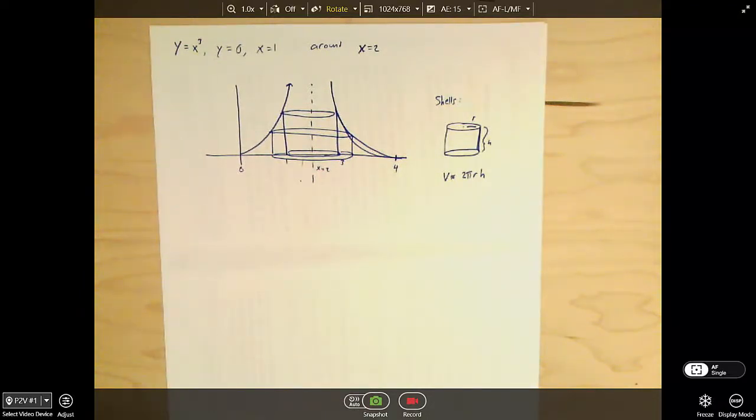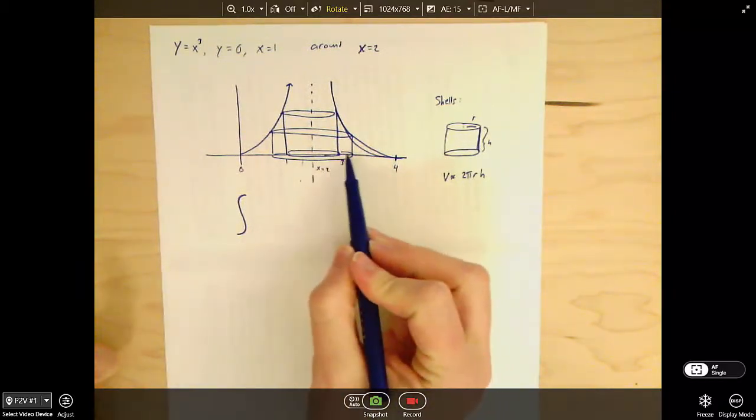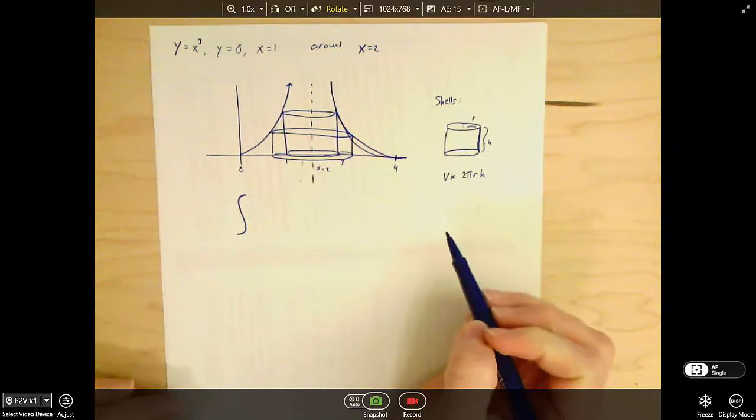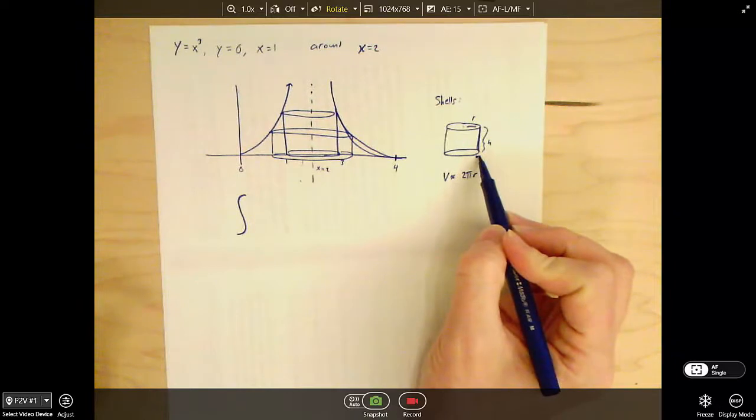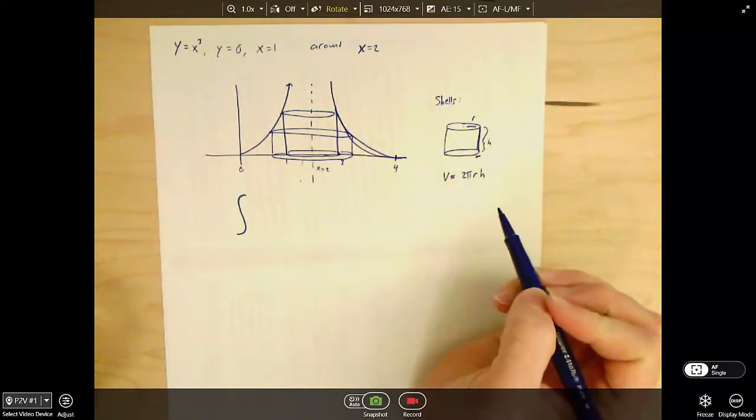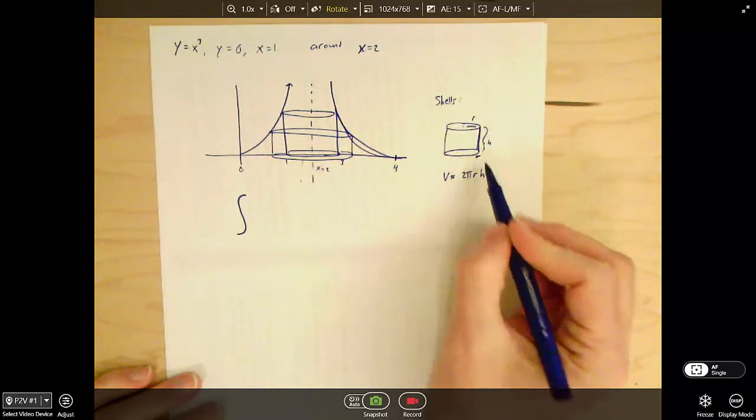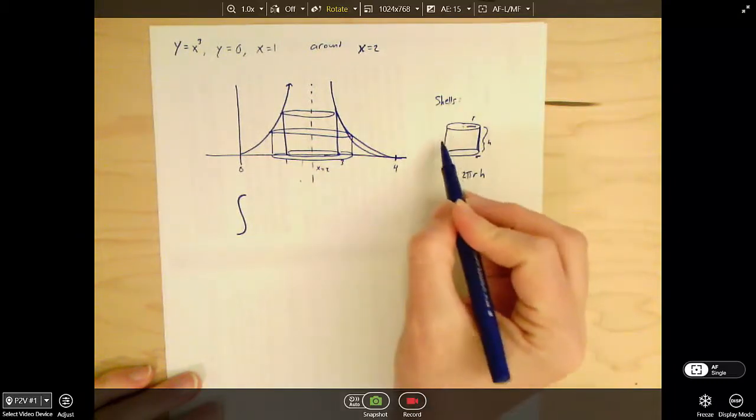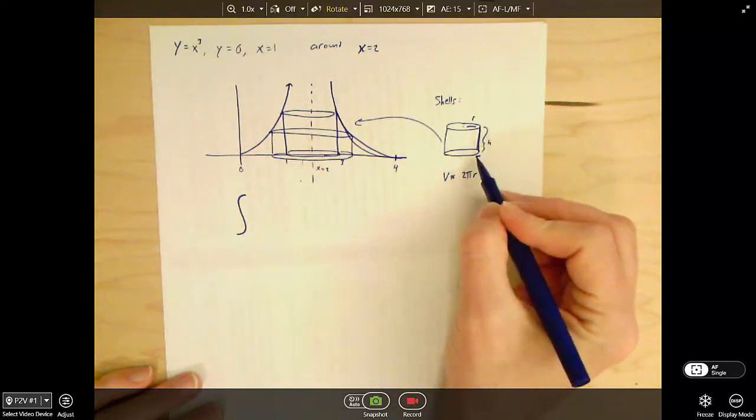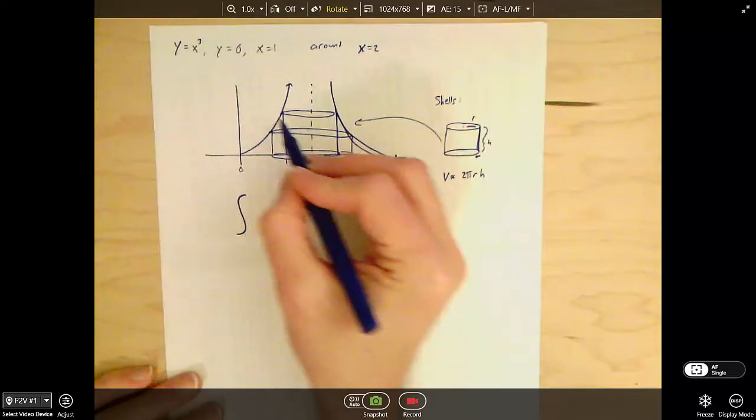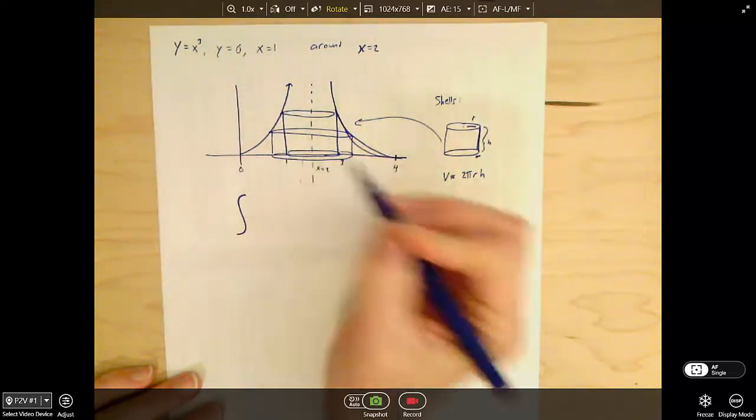So remember, the whole idea about shells is you're going to integrate through a whole sequence of these kind of nested cylinders. So we need to write the equation for the volume of an infinitely thin-walled cylinder. The volume equation is 2 pi times the radius of the cylinder times the height of the cylinder. If these cylinders are coming from over here, the height of the cylinder is given by just whatever our f of x is, or in this case our y value, at a particular x-coordinate.